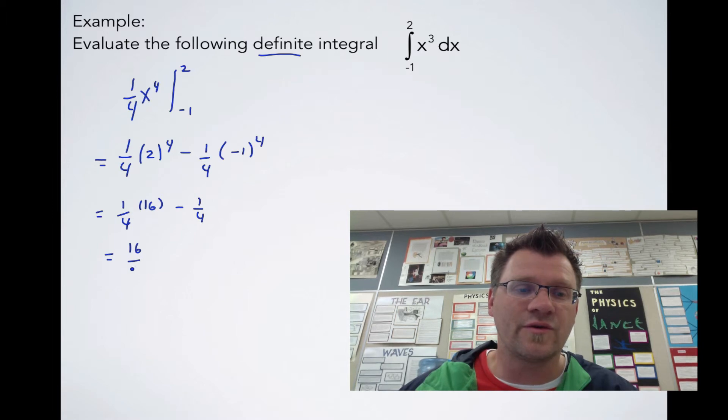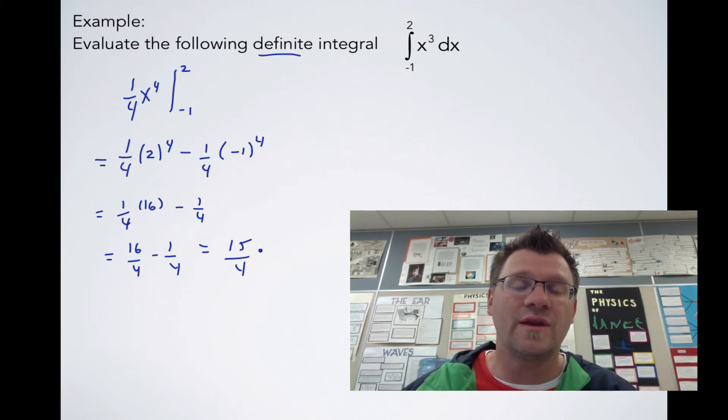So we get 16/4 - 1/4 = 15/4. Since we're talking about an area (which is what an integral is) and we didn't have units, you'll often see units squared—they'll just put a u² for units squared.